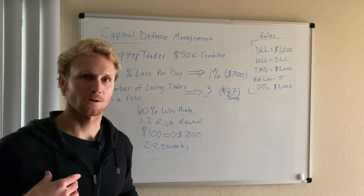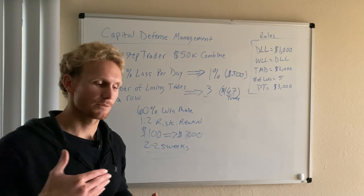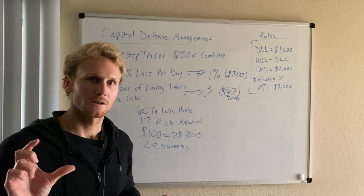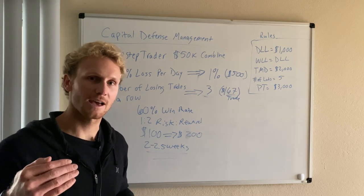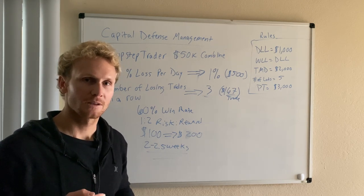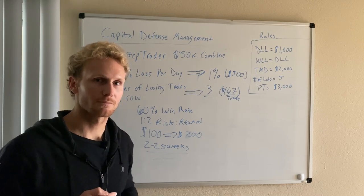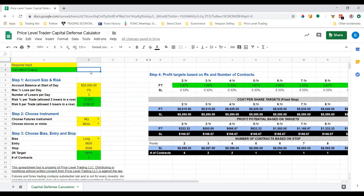Lastly, I'll talk about the calculator I call my capital defense management calculator, which I use to place my entries and stops and figure out how many contracts to use based on my stop loss — always maintaining a maximum two-percent loss per day with three trades allowed. Here we have the capital defense calculator spreadsheet. I'm going to use the fifty-thousand-dollar TopStep Trader account as an example to show you kind of where I came up with those numbers.